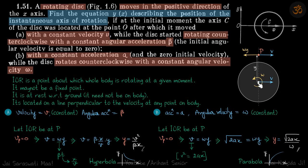For Part 1, if we take the center and the velocity v at a given moment, the IOR must lie on the line perpendicular to the velocity — somewhere along that line. If the velocity of the center of mass is v, then the IOR will also have velocity v with respect to the ground, and with respect to the center it will have velocity omega times y, if the IOR is at a distance y.